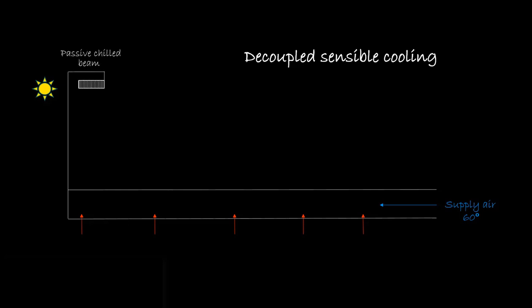The coil in a passive beam uses chill water delivered at or above the room dew point temperature to assure that no moisture is removed and thus no condensation occurs. Convective air currents flowing along the perimeter walls and windows travel through the beam's coil where sensible heat is removed.